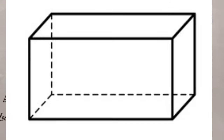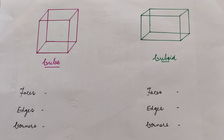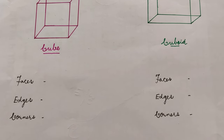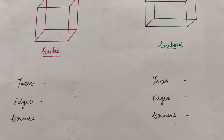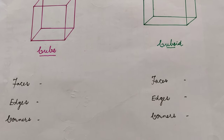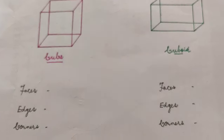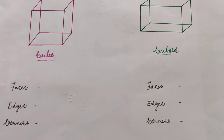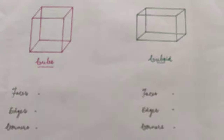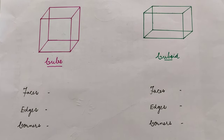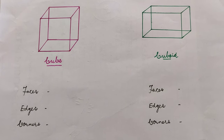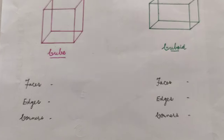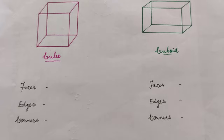After circle, we have cube and cuboid. A cube is an object made with squares — all its sides are squares. A cuboid is made with rectangles. That is the only difference: cube is made with squares and cuboid is made with rectangles. See, this is how we draw them on the page.